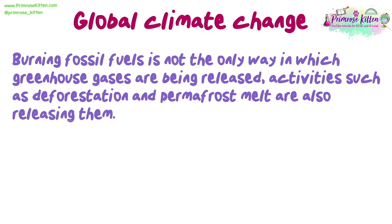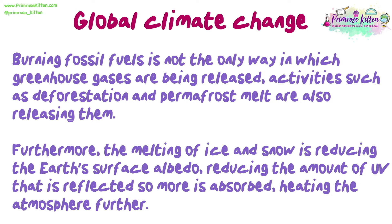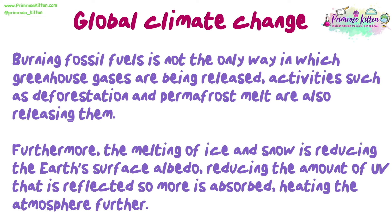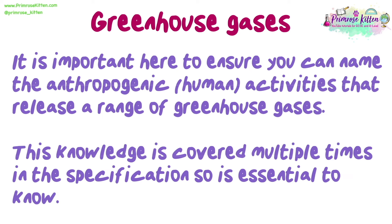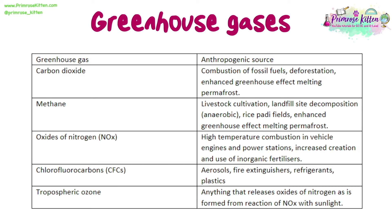Burning fossil fuels is not the only way in which greenhouse gases are being released. Activities such as deforestation and permafrost melt are also releasing them. Furthermore, the melting of ice and snow is reducing the Earth's surface albedo, reducing the amount of UV that is reflected, so more is absorbed, heating the atmosphere further. It is important to ensure you can name the anthropogenic human activities that release a range of greenhouse gases. This knowledge is covered multiple times in the specification, so it is essential to know.